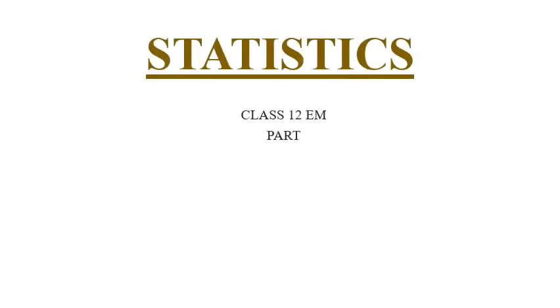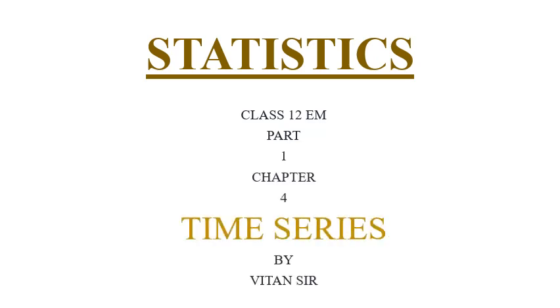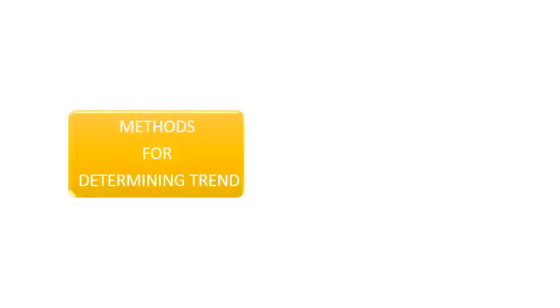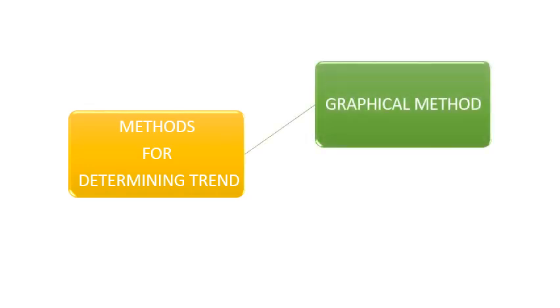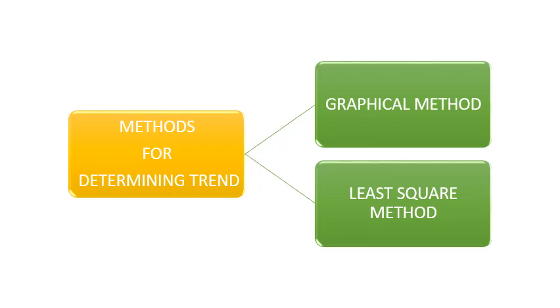Welcome to statistics for class 12th English medium. In Chapter 4, Time Series, we are going to start with the methods of time series for determining the trend. The first method is the graphical method and the second method is the least squares method. In this tutorial we will study the first method, the graphical method.